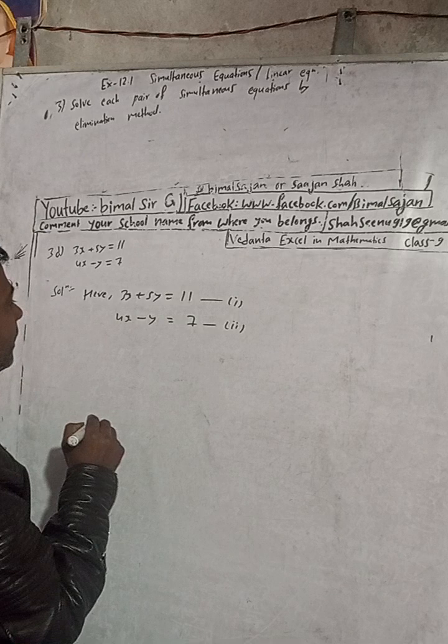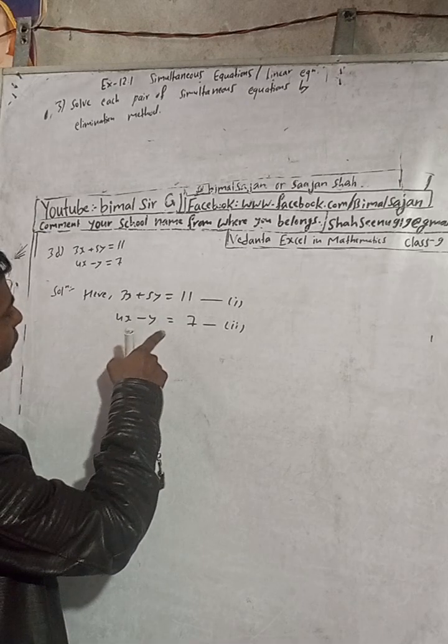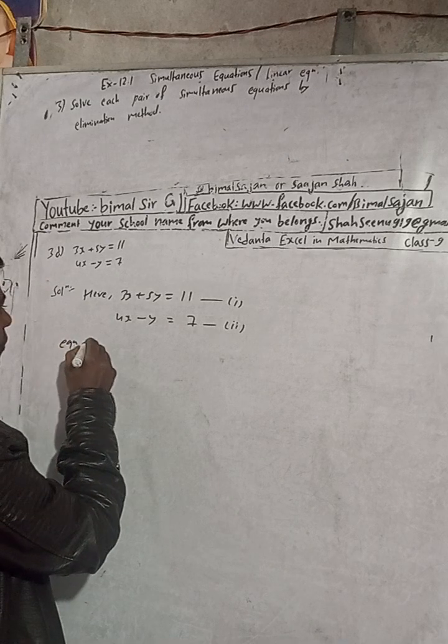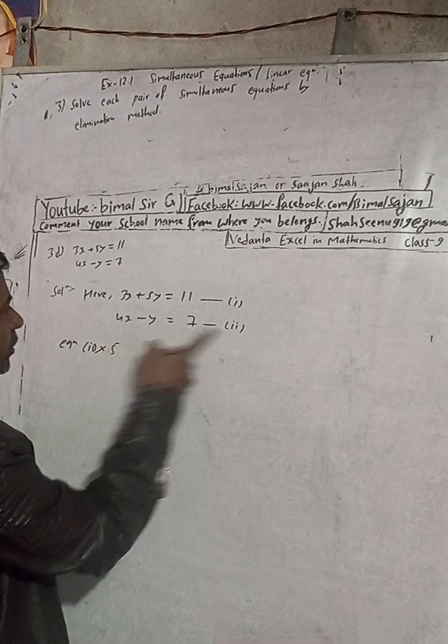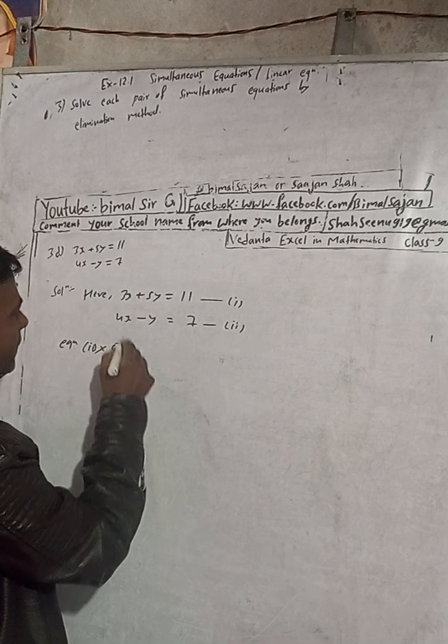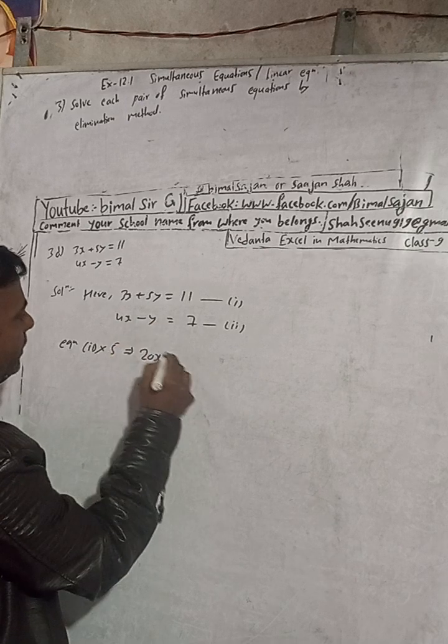So what I will do, I will multiply this equation 2 by 5. Equation 2 into 5, okay? Multiply equation 2 into 5. This implies 4 into 5 equals 20x minus 5 into 1, that's 5y, is equal to 7 into 5 or 35.